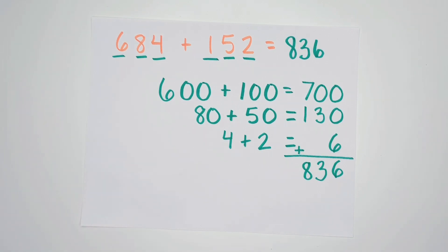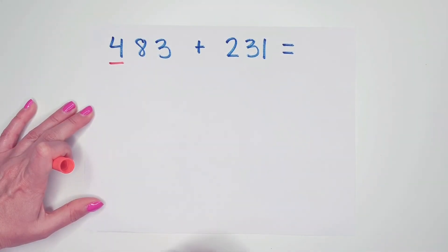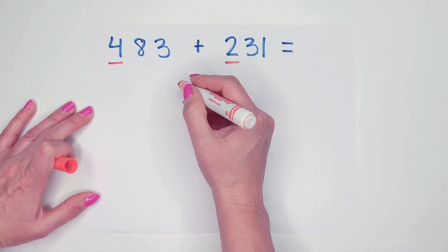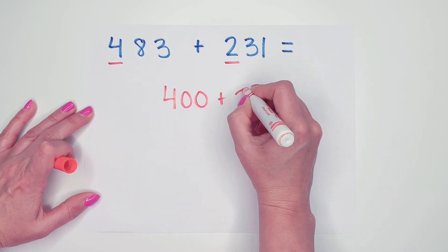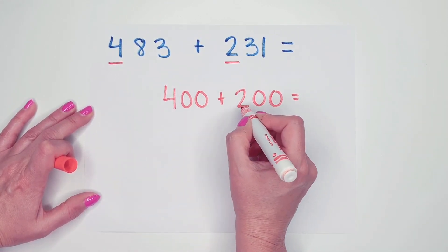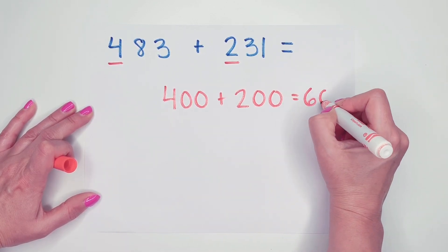Let's try another example. For this example, I want you to try it on your own and pause the video. After you've worked out the problem, press play and check your work as I go through it. We have 483 plus 231. First, I'm going to add my hundreds. So I have 400 plus 200. I know 4 plus 2 is 6. So 400 plus 200 must be 600.